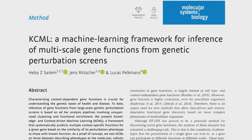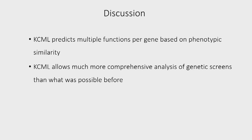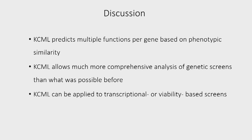The paper was published in Molecular Systems Biology last year, and we identified an interesting role for olfactory receptors in cellular organization — please have a look, as there's also interesting discussion of how to handle single-cell data and represent it. In summary, KCML predicts multiple functions for each gene based on phenotypic similarity, allowing much more comprehensive analysis of genetic screens than was previously possible. Importantly, it can be applied to any type of phenotypic data — I've applied it to image-based screen data, transcriptional data from gene knockdowns measuring gene transcription, and CRISPR screens measuring viability across different cell lines. It's a generalizable framework for learning from any phenotypic data.